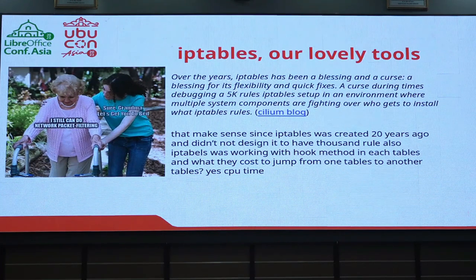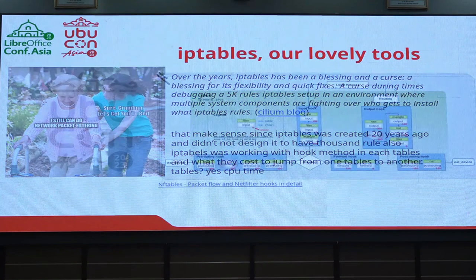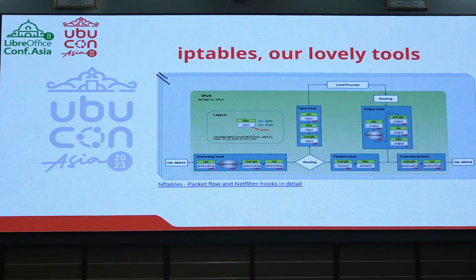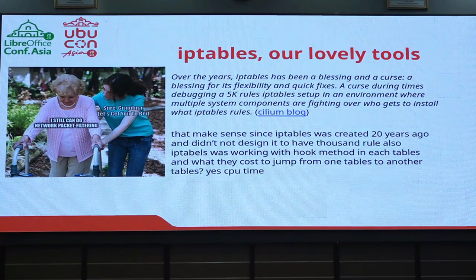Many problems are happening today because of this. For example, in the Cilium reference, over the years iptables has both blessings and curses. A blessing is flexibility for quick fixes during debugging of 5,000 iptables rules. The problem is that iptables was not designed to have thousands or millions of IP rules on one compute — that creates a bottleneck. Additionally, iptables uses chains to work, and traversing from one chain to another costs CPU time and memory.